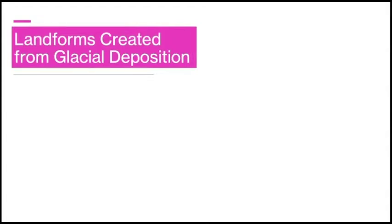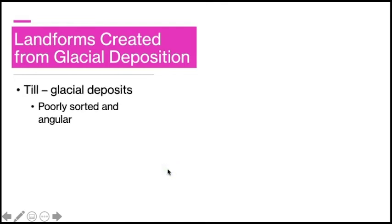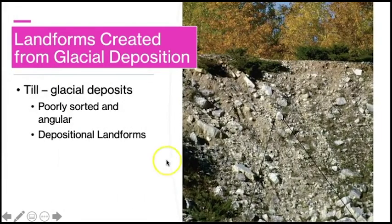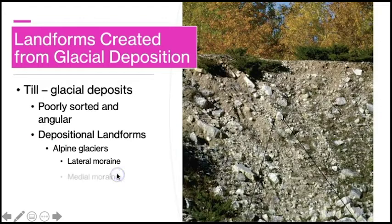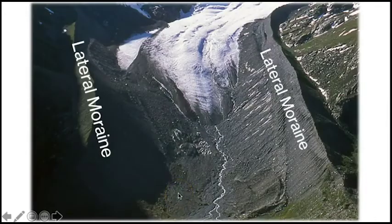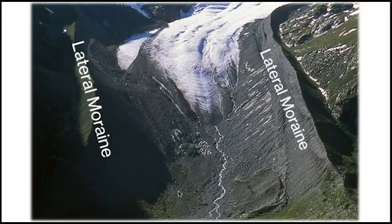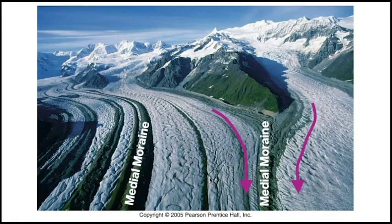When glaciers flow to lower elevations or warmer latitudes, they will melt, depositing their load of sediment, which is called till. Till is typically a very poorly sorted mix of fine to very coarse and angular grains. In some cases, the till has been shaped into distinctive depositional landforms. Two common depositional features associated with alpine glaciers are lateral moraines and medial moraines. Lateral moraines form as the melting and retreating glacier deposits its till and can be used to estimate the maximum height and extent of an alpine glacier. Medial moraines form when two lateral moraines merge into one.